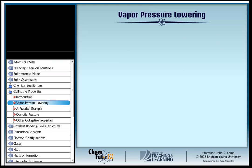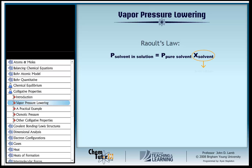With that picture in mind, here's Raoult's law: the vapor pressure of the solvent in a solution equals the vapor pressure of the pure solvent multiplied by a fraction x which reduces its size. That fraction is, in fact, the mole fraction of solvent molecules in the solution. The mole fraction of solvent molecules is the same as the fraction of molecules on the surface of the mixture which are solvent molecules. So the vapor pressure is reduced by this same fraction.